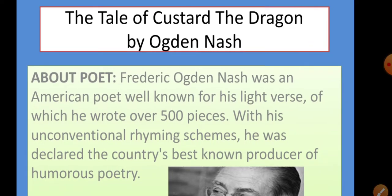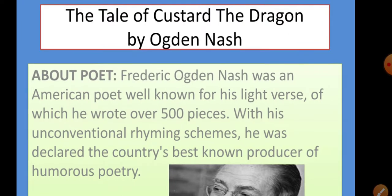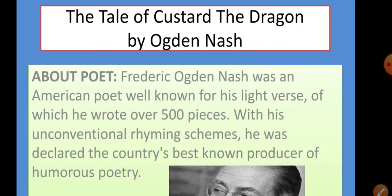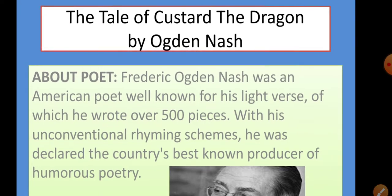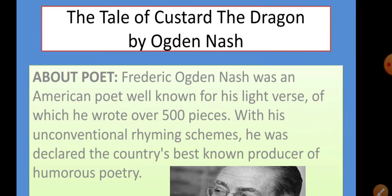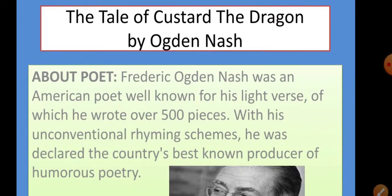When we focus on the title of this poem, we find that the present poem is a story of Custard the Dragon — The Tale of Custard the Dragon. Custard the Dragon is a character in this poem and we are going to discuss the story of Custard the Dragon. The present poem is composed by Ogden Nash.